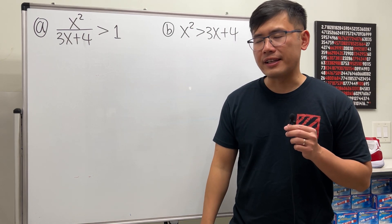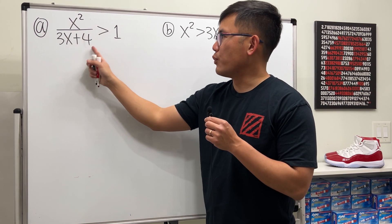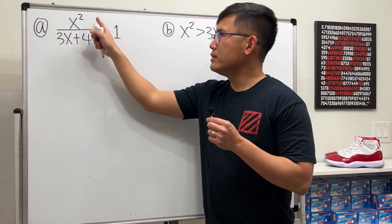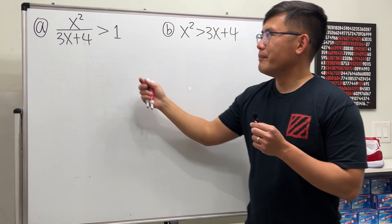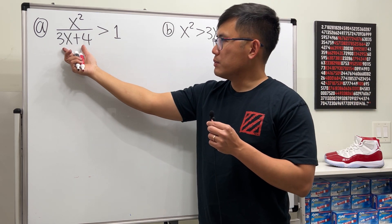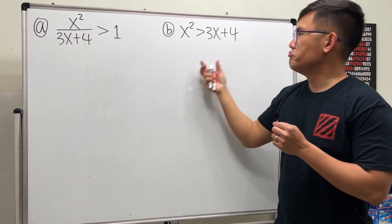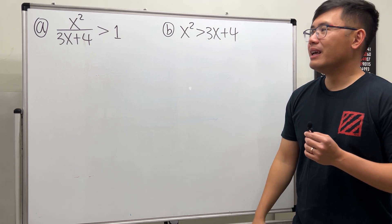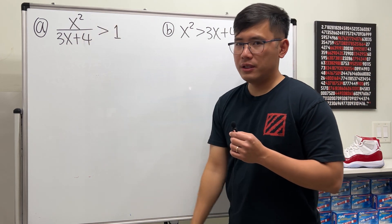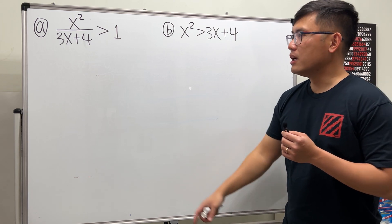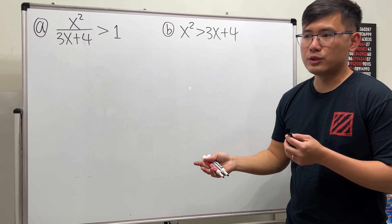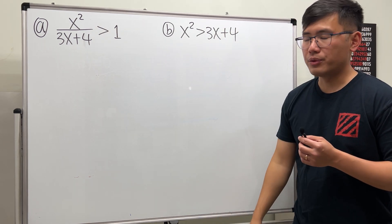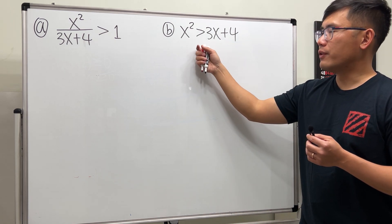We have two non-linear inequalities. The first one is x² / (3x + 4) > 1, and the second one is x² > 3x + 4. The difference between the first and the second is that it looks like we just multiply both sides by (3x + 4). But be careful — the moment you multiply or divide across an inequality, you may have to switch signs because you don't know if x is negative. If these were equations, they would be the same thing.